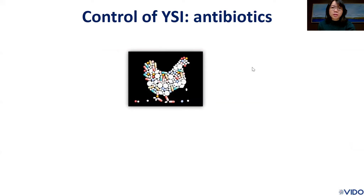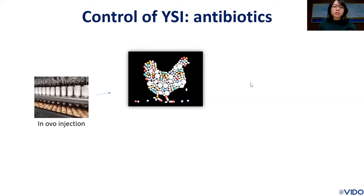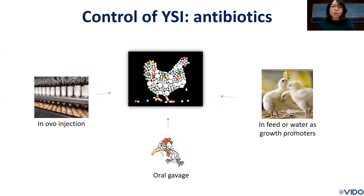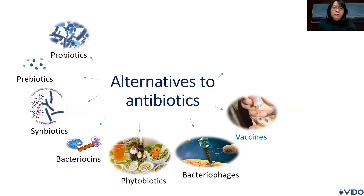For control of this disease or other bacterial infections, antibiotics are usually used in different routes such as in ovo injection, added to feed or water, or via oral gavage. However, antibiotic residues cause many drawbacks, including increasing antibiotic-resistant organisms, public health concerns, and environmental hazards. That is why more efforts are now being put into developing alternative approaches to antibiotics for control of these infections.